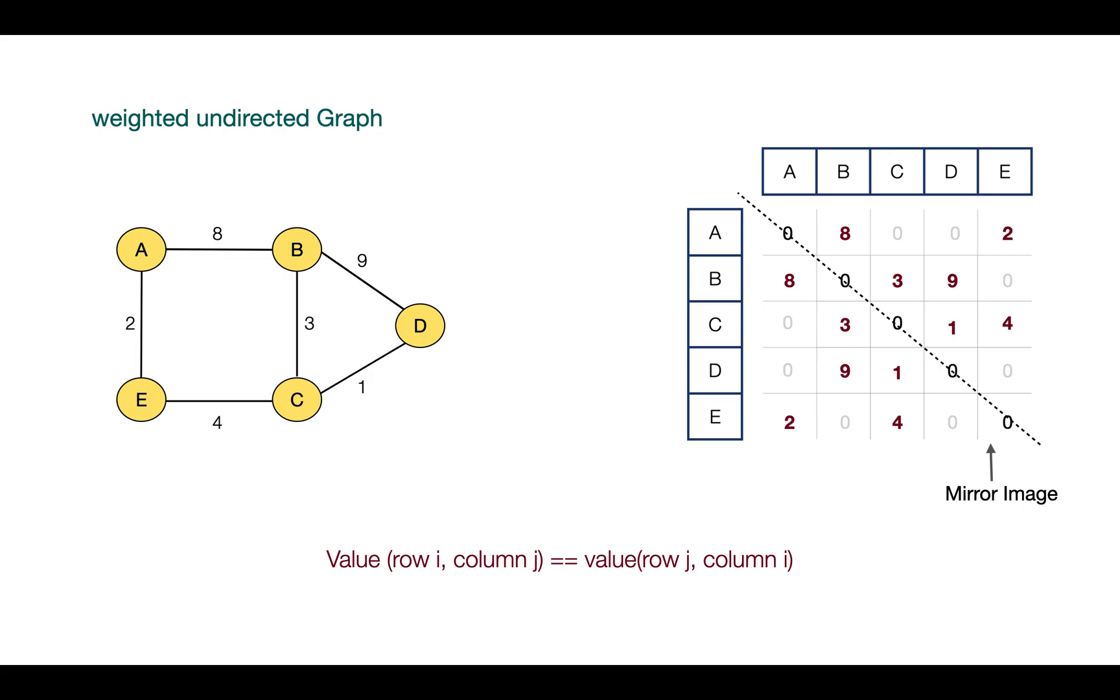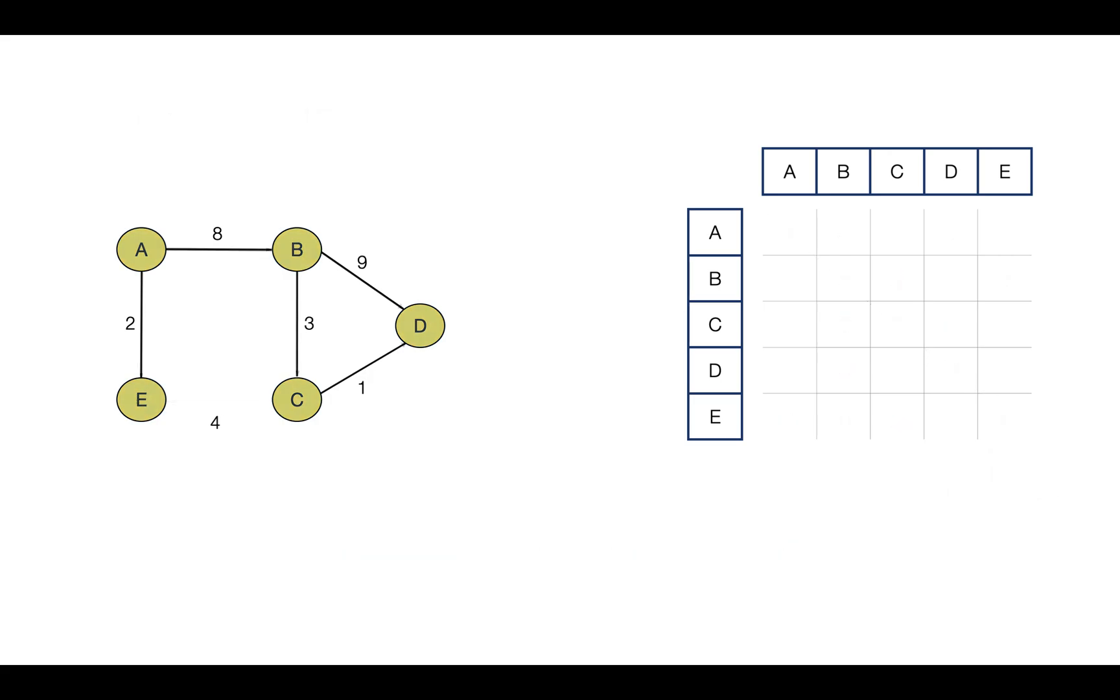Now let's add directions to this graph. Now B is no longer said to be adjacent to A because there is no direct edge from B to A. We only have a single direction for this edge which is from A to B. That's why row belonging to A will be having B as an adjacent node in this adjacency matrix. But the reverse is not true.